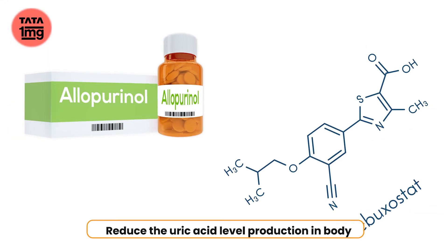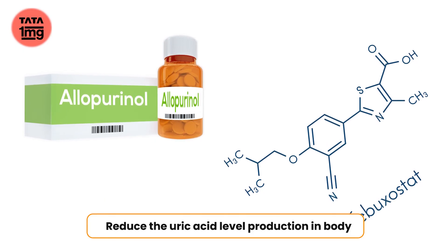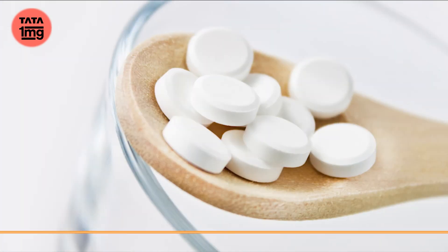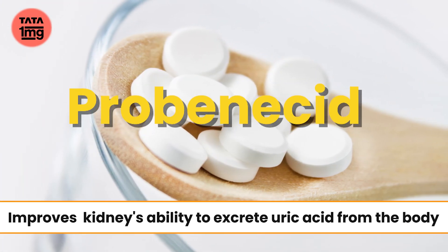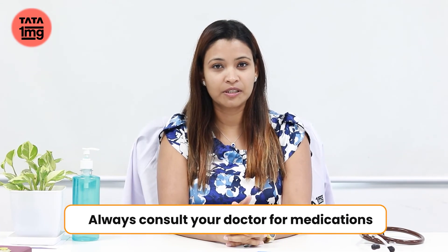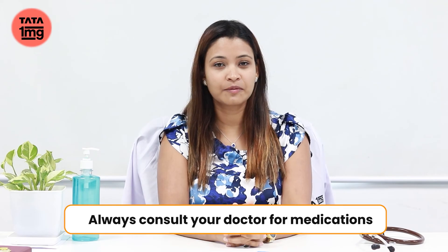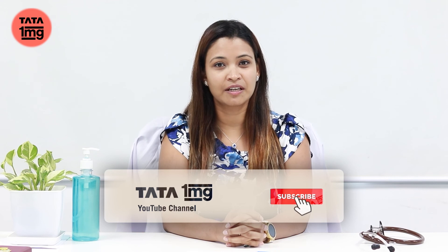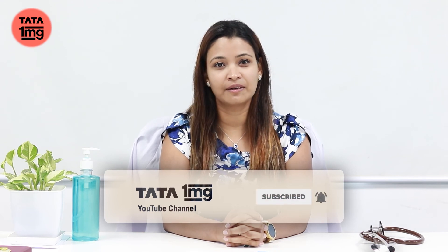The first medications are allopurinol and febuxostat. These two medications limit uric acid production in the body. Another commonly used drug is probenecid, which increases your kidney's ability to excrete uric acid. If you liked this video, please like, share, and subscribe to our channel.